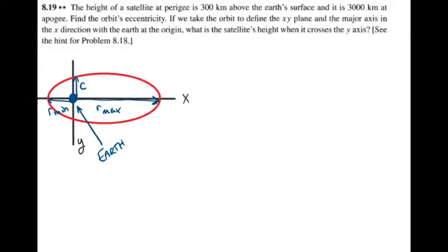In this video, I'll be solving problem 8.19 from Taylor's Classical Mechanics. The height of a satellite at perigee is 300 kilometers above the Earth's surface, and it is 3,000 kilometers at apogee. Find the orbit's eccentricity.